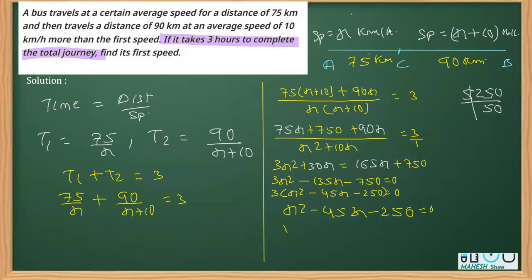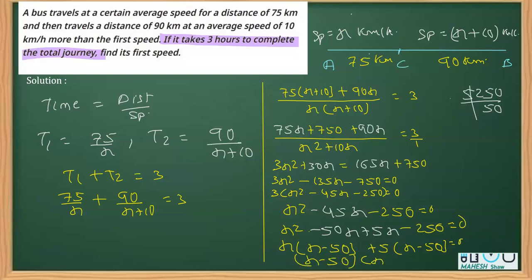This is x square minus 50x plus 5x minus 250 equals 0. I've split 45x. Now I can take x as common, so it is x minus 50, and when I take 5 as common, I'll again get x minus 50. So finally it is x minus 50 and x plus 5 equals 0.